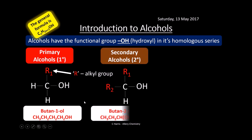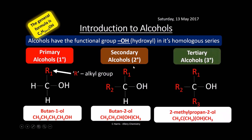You can get secondary alcohols as well, where the alcohol is bonded to a carbon which is bonded to two other carbons. Butane-2-ol is classed as secondary. Tertiary alcohols have an alcohol bonded to a carbon bonded to three other carbon groups — for example 2-methylpropan-2-ol. These are the structural formulas of the examples shown.